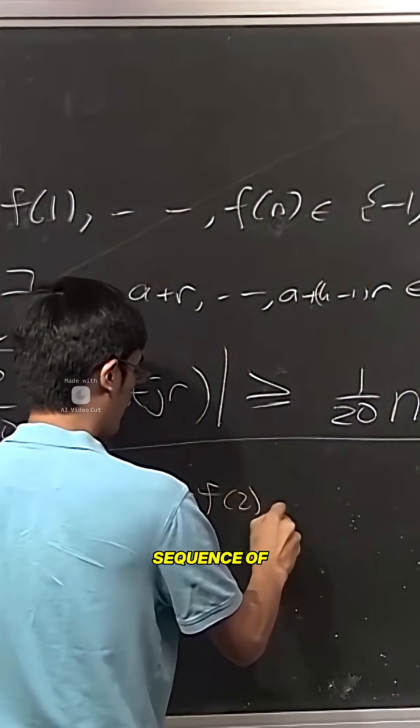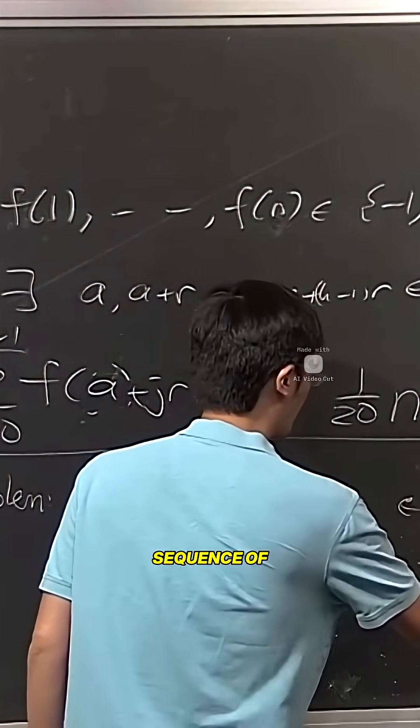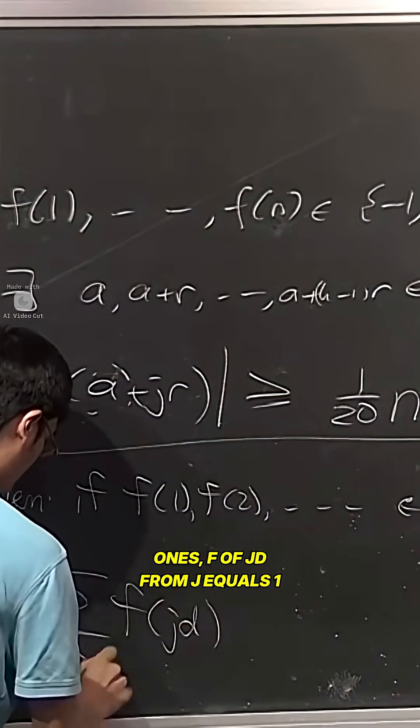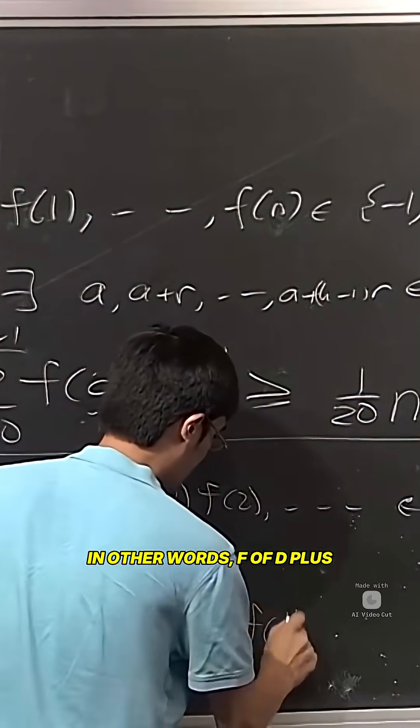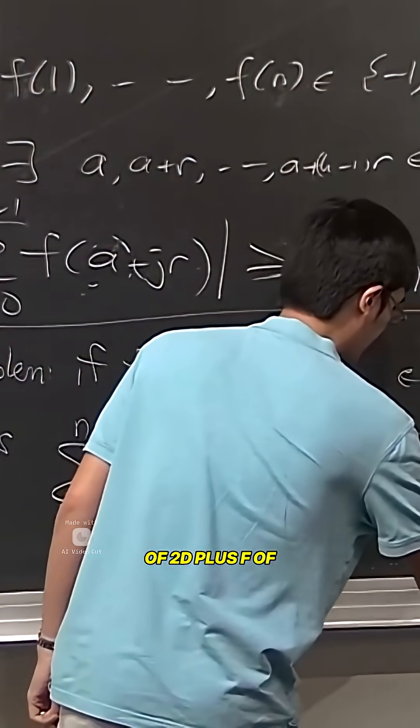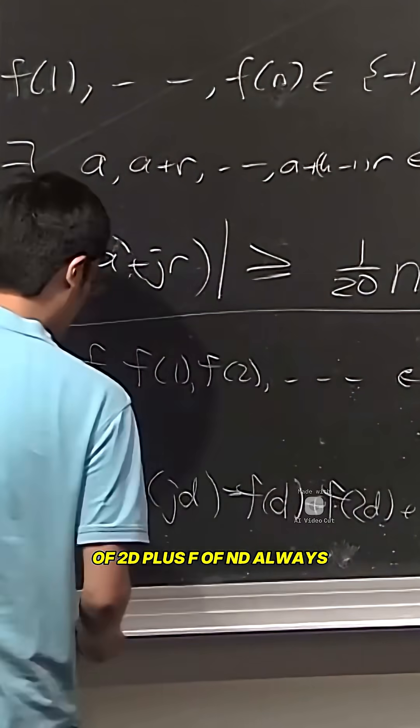If you have an infinite sequence of plus and minus 1s, f of jd from j equals 1 to n, and these sums—in other words, f of d plus f of 2d plus f of nd—always unbounded.